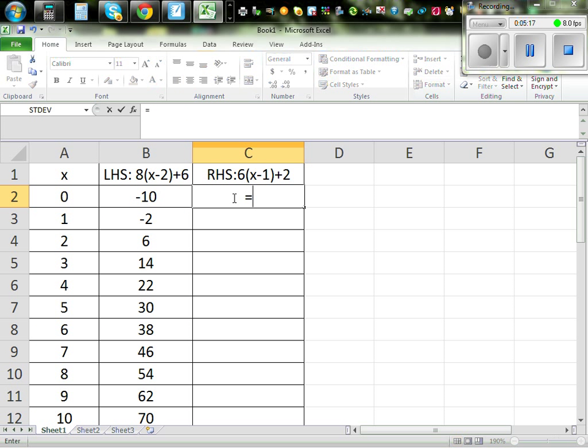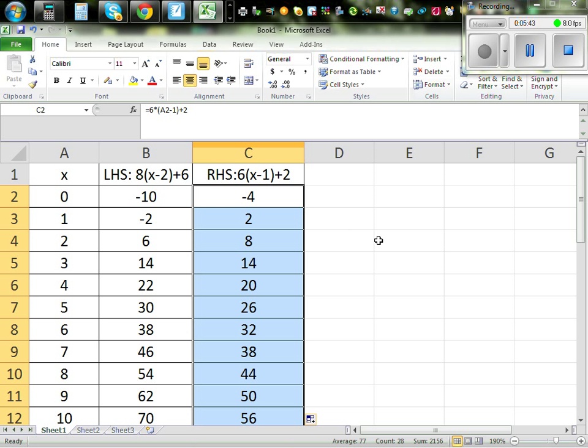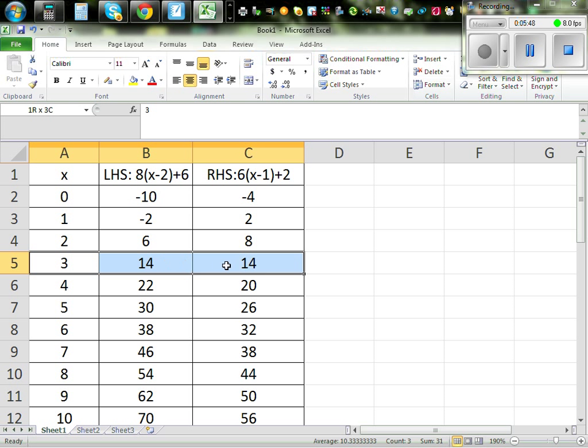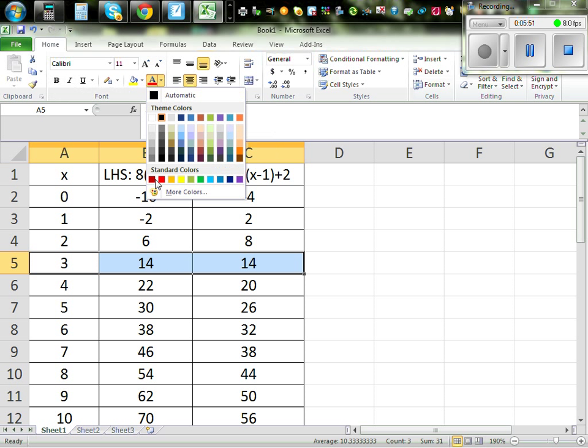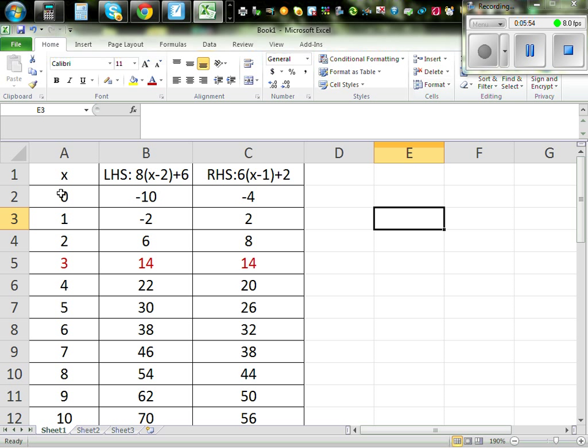For right hand side you go 6 times bracket A2 minus 1 plus 2, enter, and catch the tail and drag down. Even if you double click it will get you all the answers. So here I will highlight and make this in red. So that's your answer. When x is 3 your left hand side is equal to right hand side, so your answer is 3.